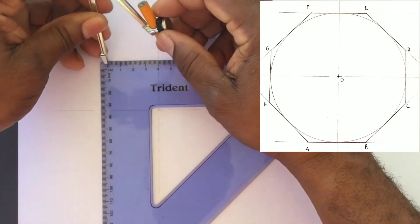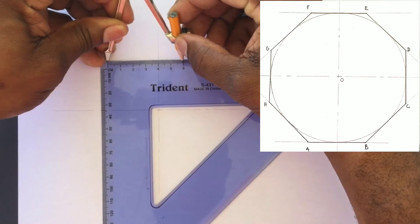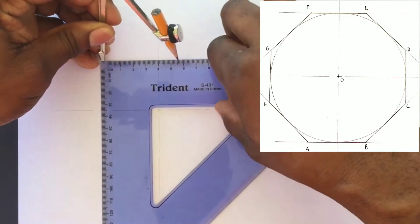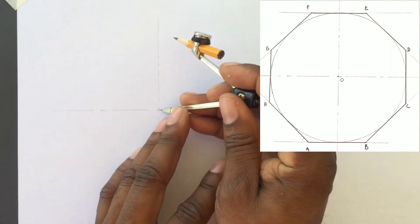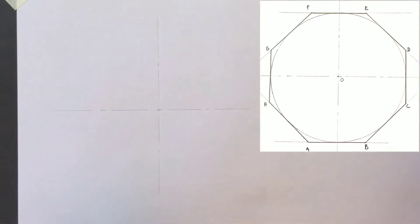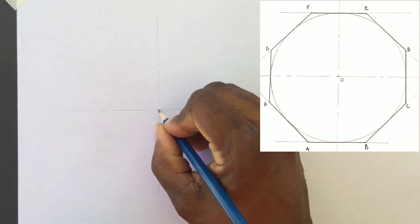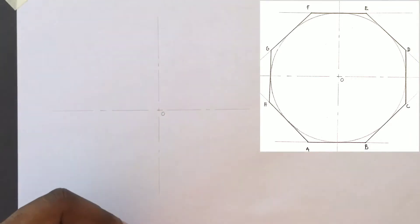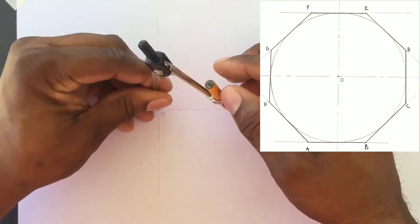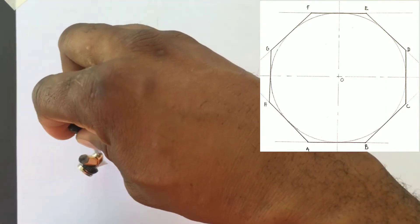We will open our compass to a radius of 60 millimeters. The distance across the flats today is 120 millimeters. We will identify our center O. With your compass open to 60 millimeters, you will scribe a circle.